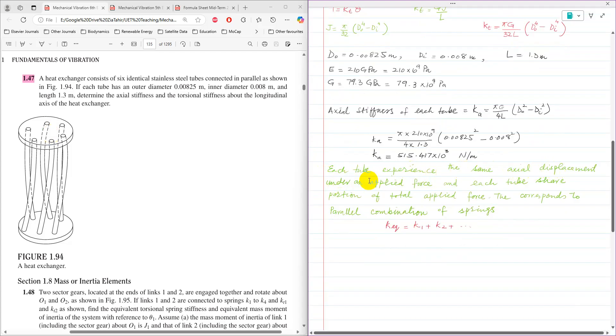Each tube experiences the same axial displacement under the applied force and each tube shares portion of total applied force depending upon its stiffness. This corresponds to the parallel combination of springs. K_A equivalent is K1 plus K2 plus all that, because there are 6 tubes connected. For each tube, their axial stiffness is going to be added.